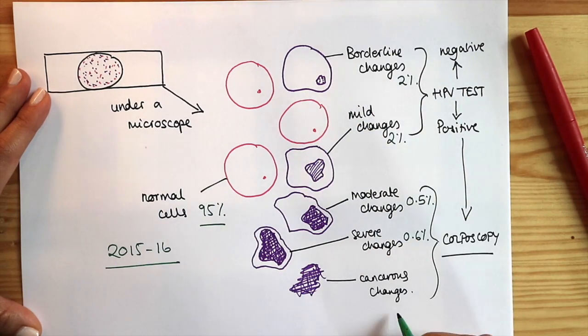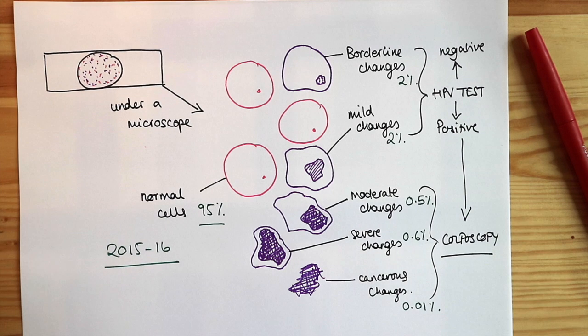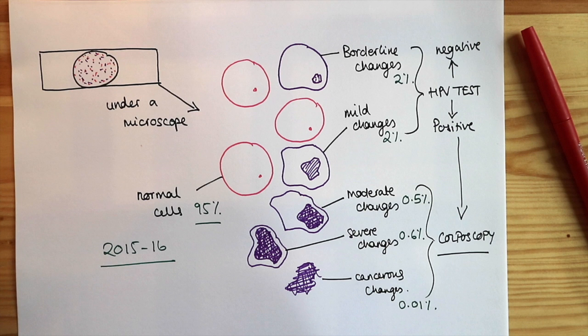In 2015-16, 95% of women had normal smear, 2% had borderline and mild changes, 0.5 and 0.6 moderate and severe. Less than 1 in 10,000 women have cancerous changes so it's really incredibly rare.